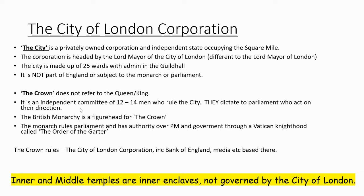The monarch rules parliament and has authority over the Prime Minister and the government through a Vatican knighthood called the Order of the Garter. The Crown rules the City of London Corporation, which includes the Bank of England, the media, and anything else based there.